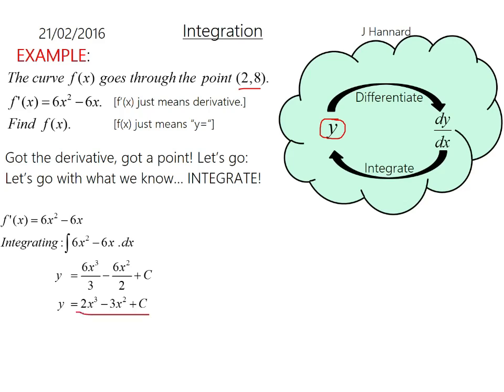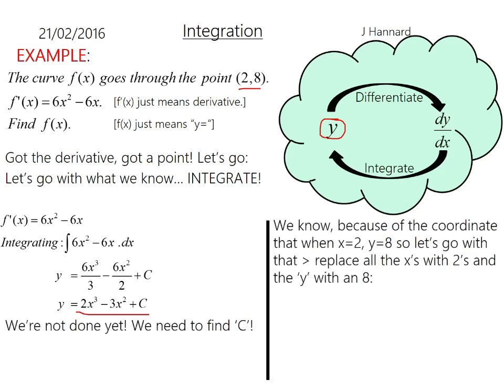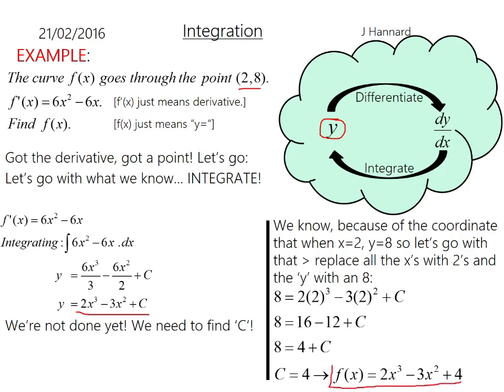But now we've been given some information that when x is 2, the y is 8. So substitute your numbers in. Everywhere I've seen an x, I've replaced it with a 2. So it's 2 lots of 2 cubed minus 3 lots of 2 squared plus c. So you end up with 8 equals 16 minus 12 plus c. So 8 equals 4 plus c. Take the 4 over the other side. Your c must equal 4. And this is the most important thing that you must write for the examiner. It's the final answer, replacing that c with a 4. So it'll be f(x) equals 2x to the 3 minus 3x squared plus 4. And that is your answer.